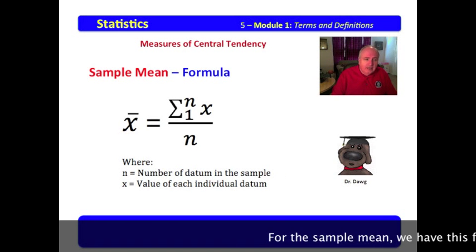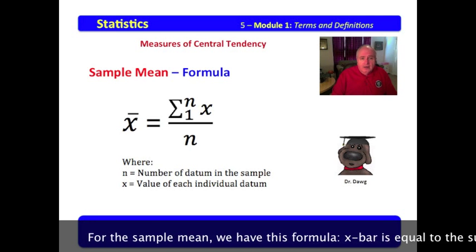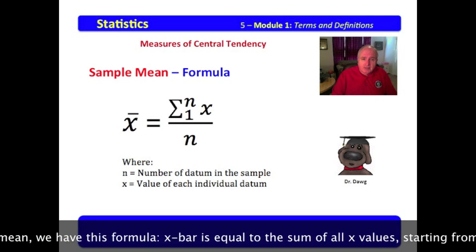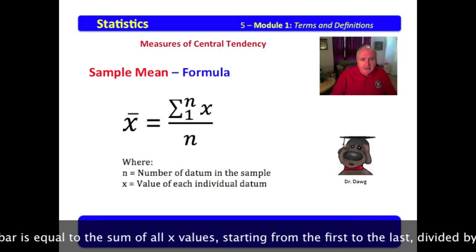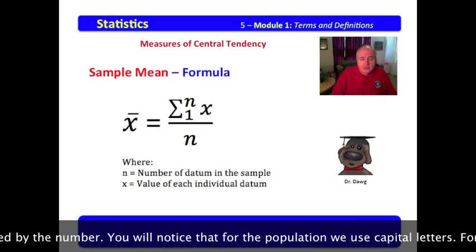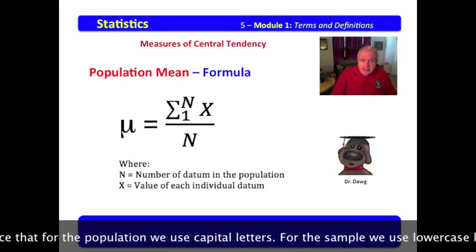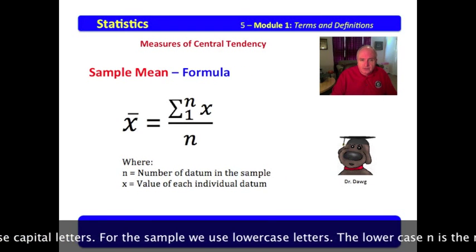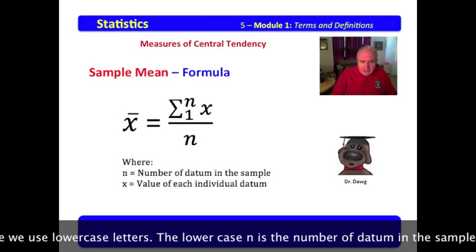For the sample mean, we have this formula. Now, x-bar is equal to the sum of all x values, starting from the first to the last, then divided by the number. You'll notice that for the population, we use capital letters. For the sample, we use lowercase letters.